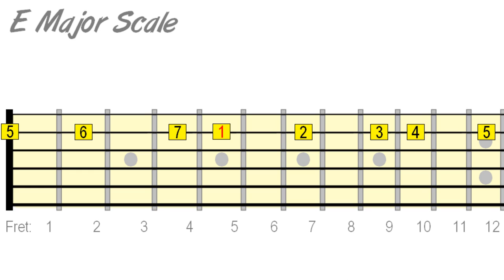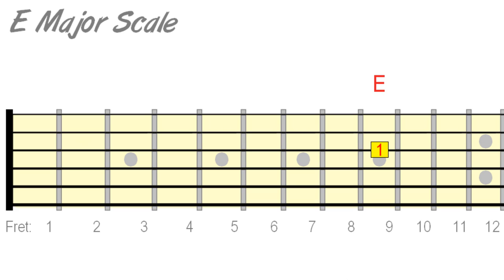On the G string, E can be found at the 9th fret. Again we should be able to play the scale from this position. If you're not yet confident with locating notes on different strings like this, go through the fretboard lessons on fretjam.com for a quick primer.